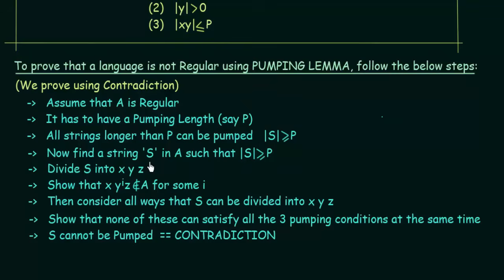What we have to do is find a string S in the language A such that the length of S is greater than or equal to P. You have to choose such a string S from language A. After that, divide S into three parts X, Y, and Z as described in the Pumping Lemma statement. Then you have to show that XY^i Z does not belong to A for some value of i.